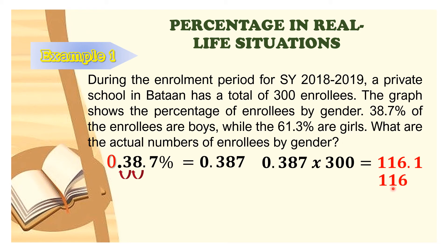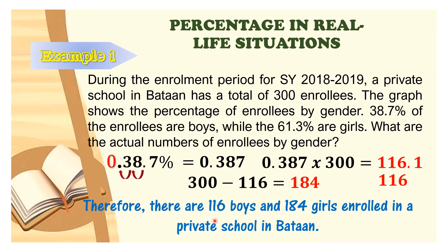Using 116 as the number of boys, we subtract from the total: 300 minus 116 equals 184 girls. We could also compute the girls' percentage first, then derive the boys — either approach works. Therefore, there are 116 boys and 184 girls enrolled in the private school in Bataan.